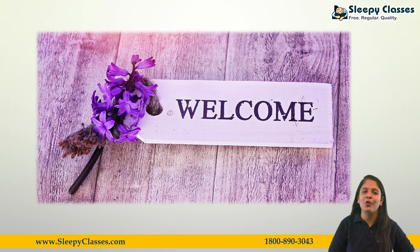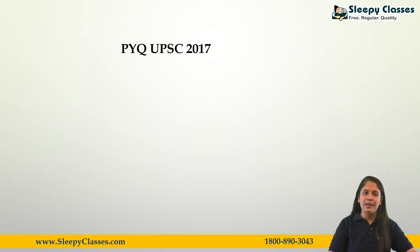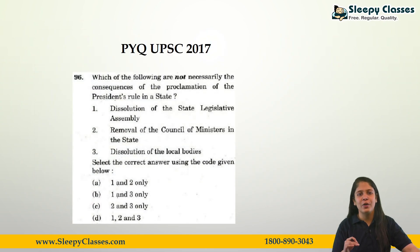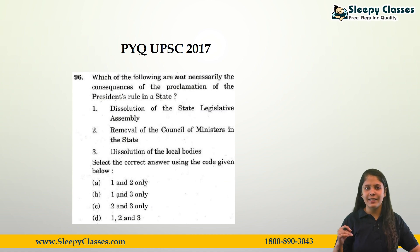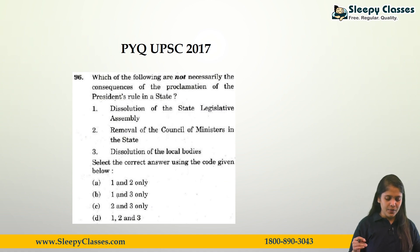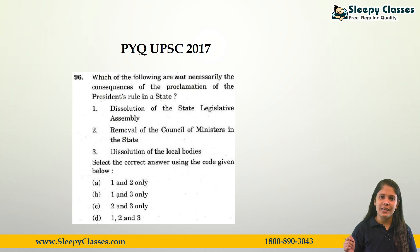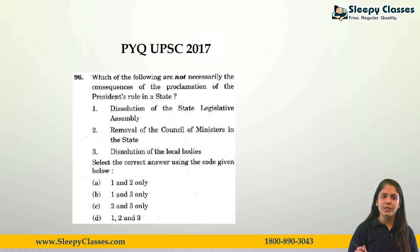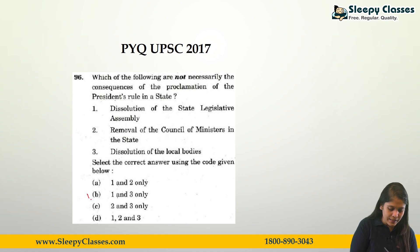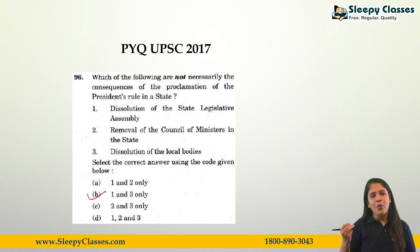Today we will start Geography NCERT. But before that, let's discuss the UPSC previous year question from the last lecture. The question is: which of the following are not necessarily the consequence of the proclamation of President's Rule in a state? First, dissolution of the state legislative assembly. Second, removal of the council of ministers in the state. Third, dissolution of the local bodies. The correct answer was option B, that is 1 and 3 only.